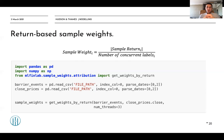Return-based sample weights divide the absolute value of the return by the number of concurrent labels. This means that if a label is concurrent with many others, it will have lower sample weights despite the fact that the return of the label itself is relatively high.